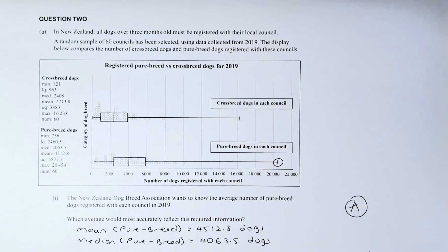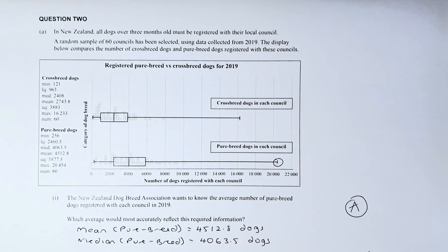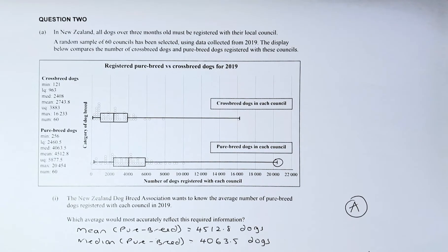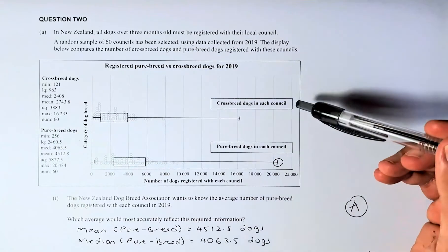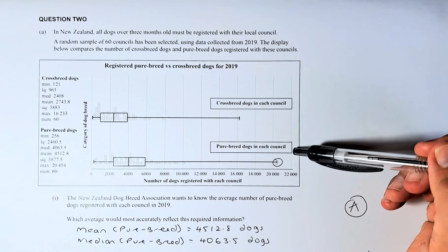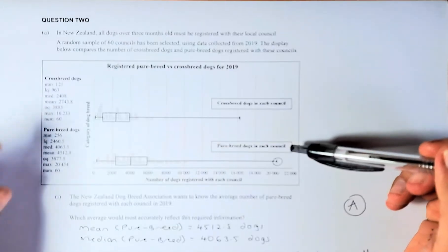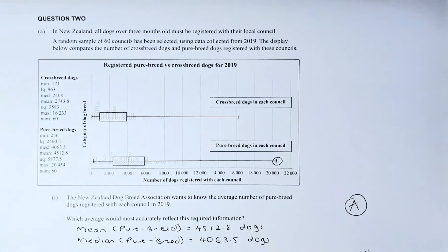Without further ado, let's read the question. In New Zealand, all dogs over 3 months old must be registered with their local council. A random sample of 60 councils has been selected using data collected from 2019. The display below compares the number of crossbreed dogs and purebred dogs registered with their council. In the two graphs, this is the box and whiskers graph — the crossbreed dogs is on top and the purebred dogs is at the bottom. The statistics are found on the left-hand side of the graph.